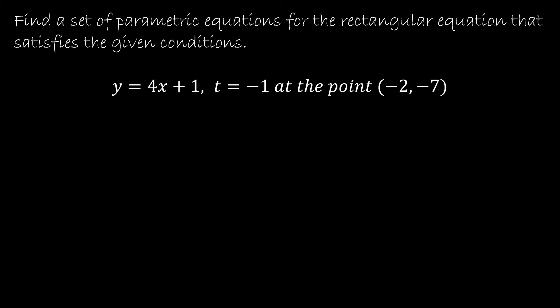So let's take this one step further. This is still a rectangular equation. I'm still to find a set of parametric equations. And instead of just a rectangular equation, they've also given me a condition. And that condition says when t is negative 1, the point is negative 2, negative 7.